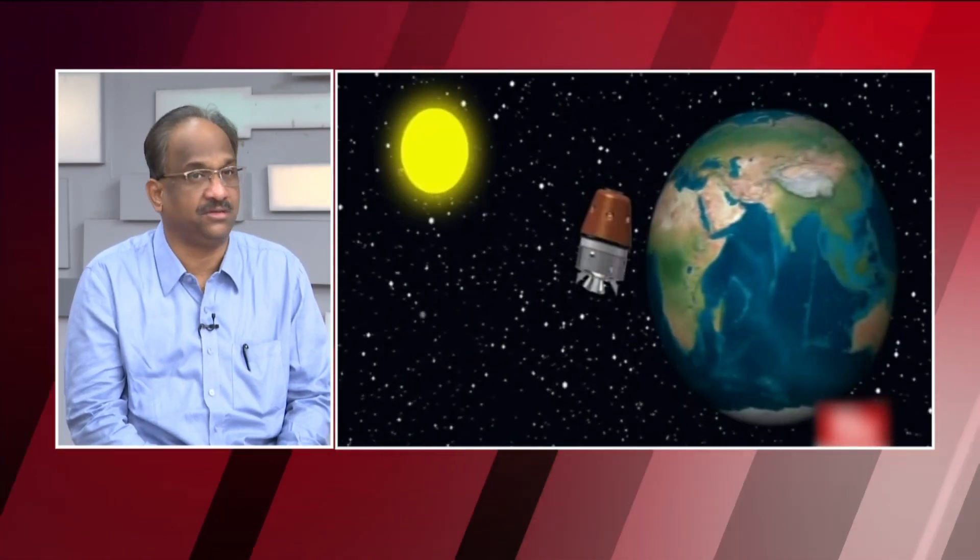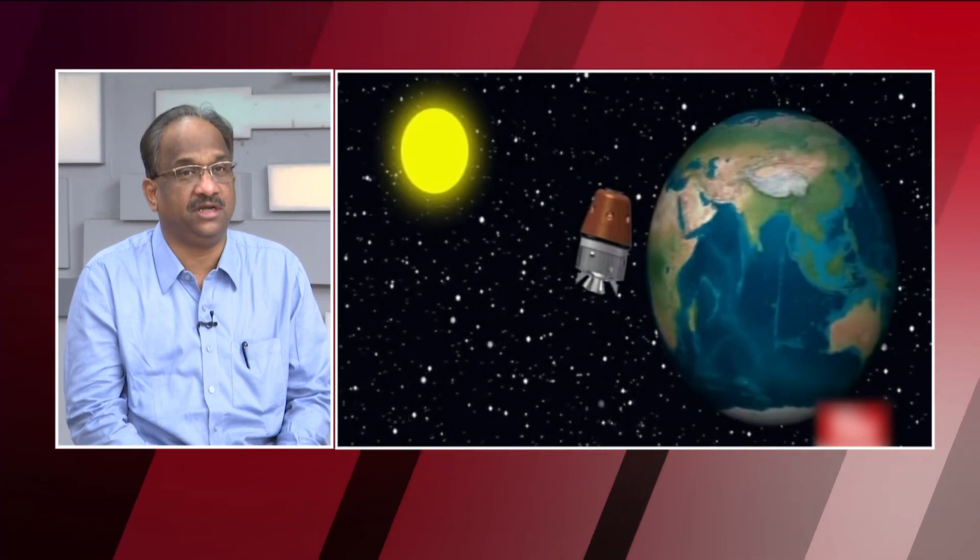There are two landers called Vikram — named after Vikram Sarabhai, the Father of India's Space Program — and a rover called Pragyan.